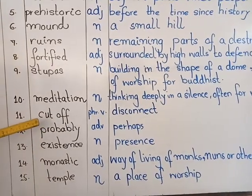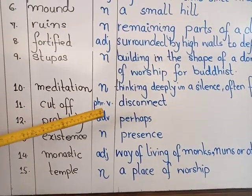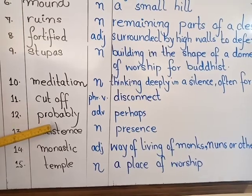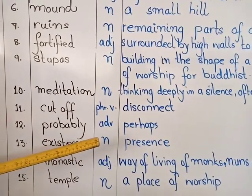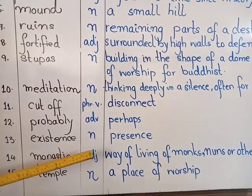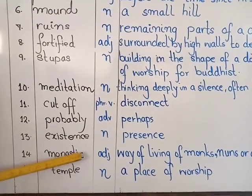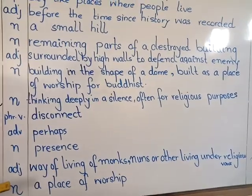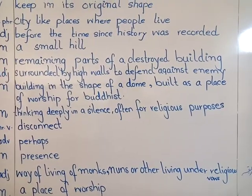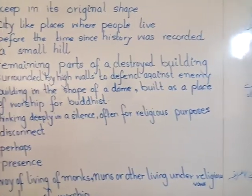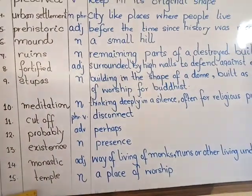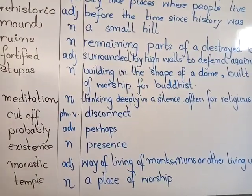The next five words: the first is 'cut off', a phrasal verb meaning disconnect — munqata karna. The next is 'probably', an adverb meaning perhaps. Then 'existence', a noun meaning presence. 'Monastic' is an adjective meaning a way of living of monks and nuns under religious vows — isolated, religious way of life. And 'temple', a noun meaning a place of worship — mandir.